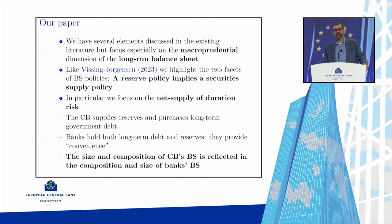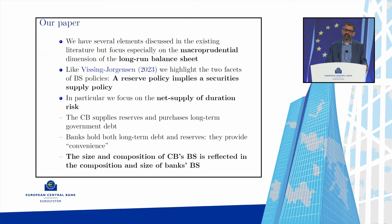Starting from Vissing-Jorgensen, any decision concerning reserve supply — whether ample, abundant, or otherwise — will be reflected in the size of assets demanded by the central bank, affecting the net supply of those assets in the market. The central bank competes with financial institutions for those assets, and since those assets often display different duration than reserves, the central bank's balance sheet decision affects the net supply of duration risk in the market.